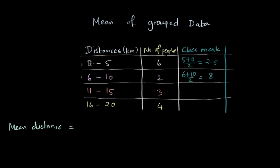So we don't know how many kilometers these six people walk, or one of them could just be walking one kilometer, two of them could be walking three kilometers, but we are just assuming that all these six people walk 2.5 kilometers. That's the meaning of class mark here.